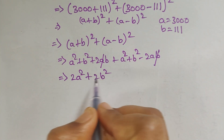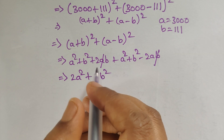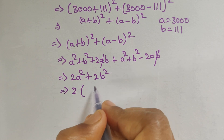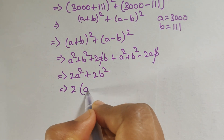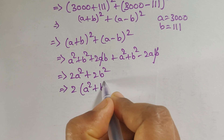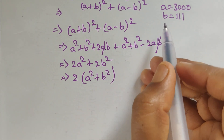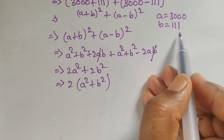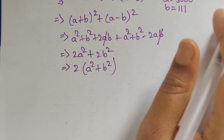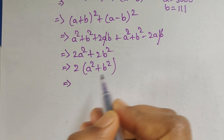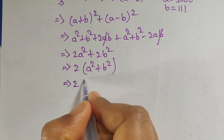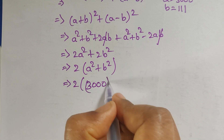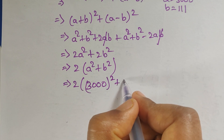So we get 2a² + 2b², and since both terms have 2 in common, we can factor it out: 2(a² + b²). Now substituting the values — a = 3000 and b = 111 — we get 2(3000² + 111²).